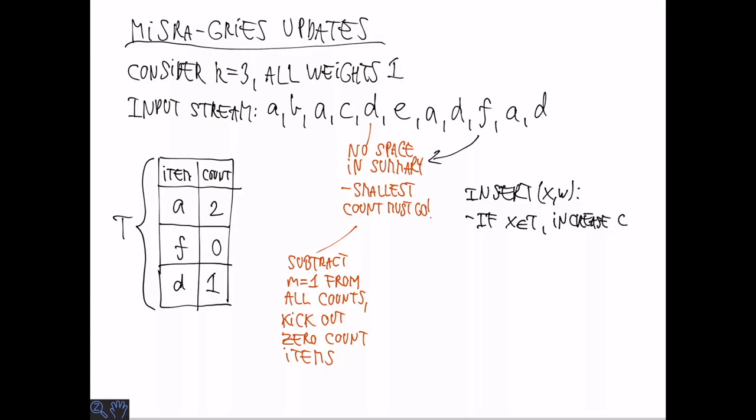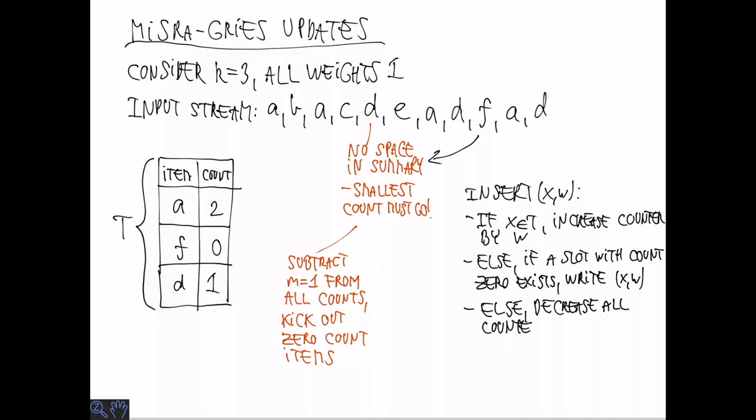Of course if an item X is already in there we simply increase the counter by W. Otherwise if there is a free slot, that's a slot with a count of 0, then we can simply overwrite that and write the pair X, W. And finally if there is no space we are going to decrease all the counters by M which is the minimum over all weights in T. And then we are going to insert the new pair which consists of X with weight W minus M.